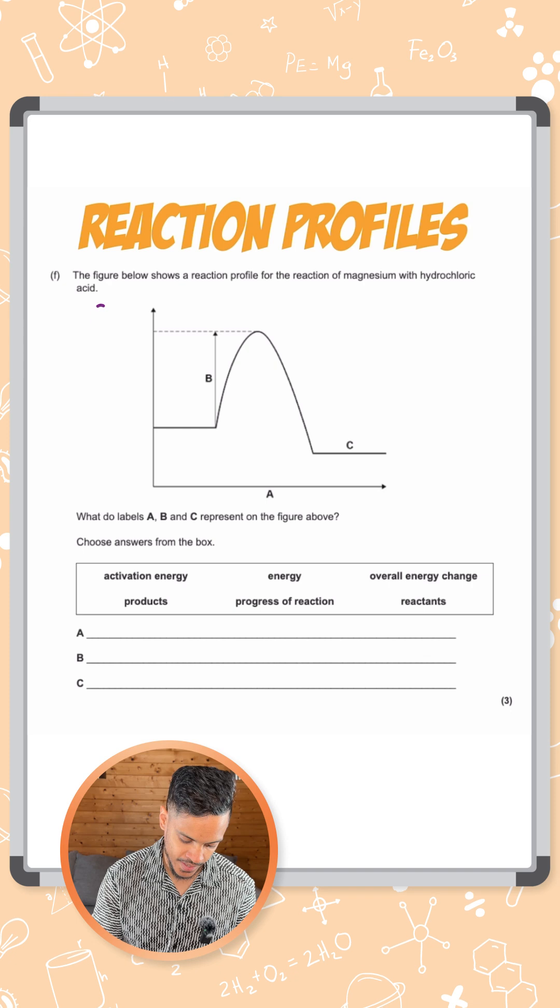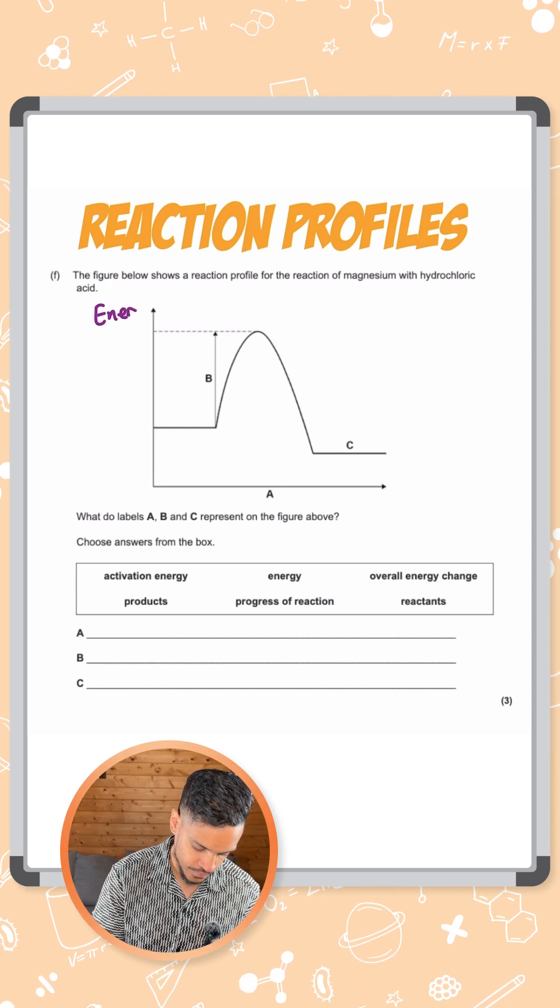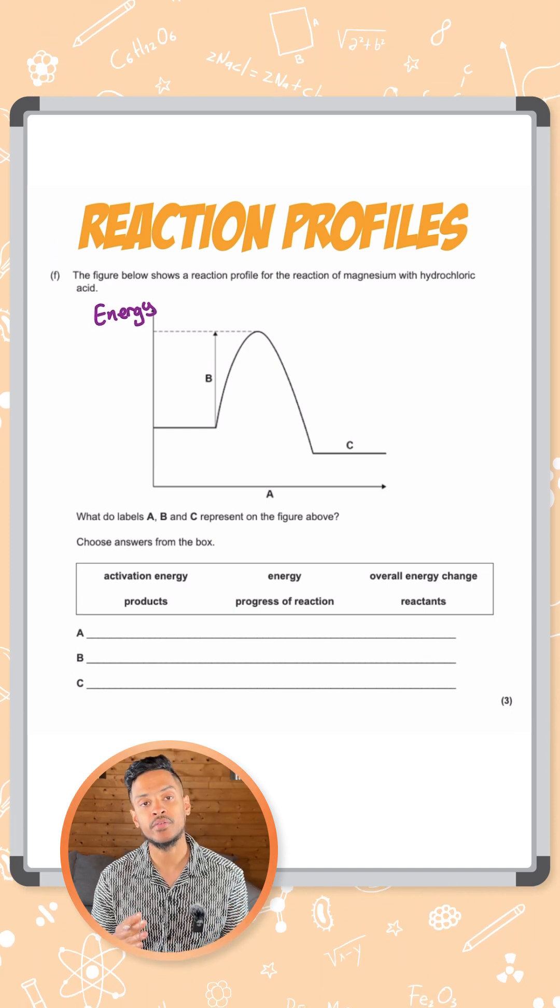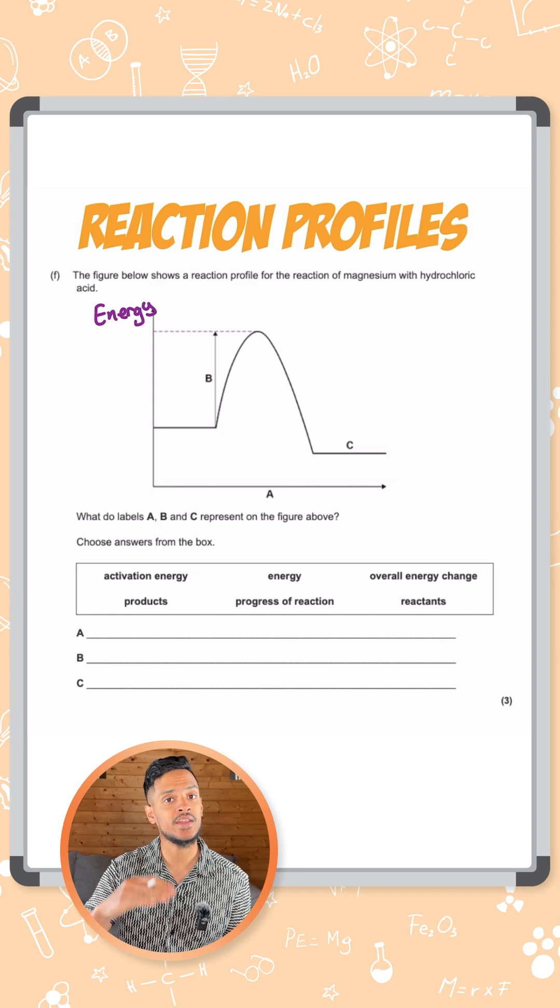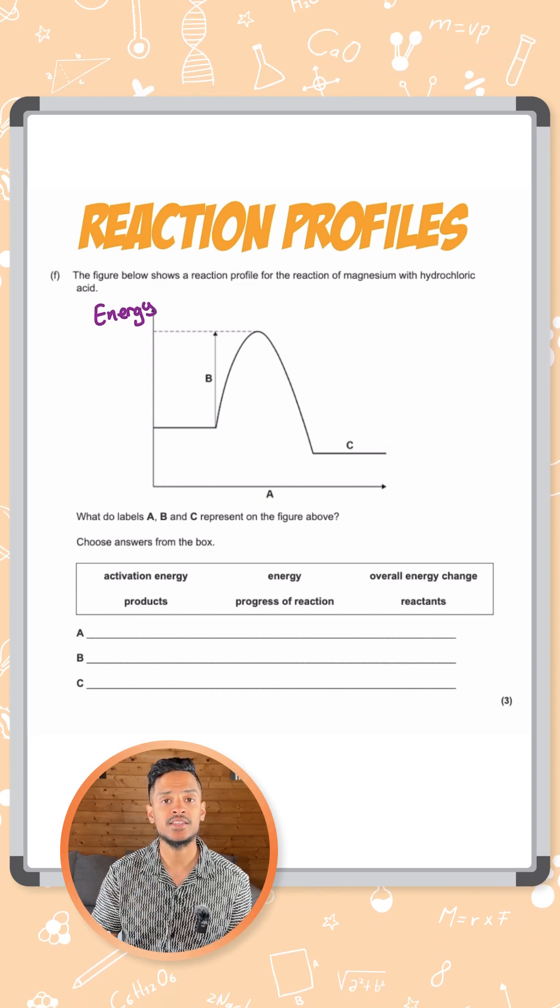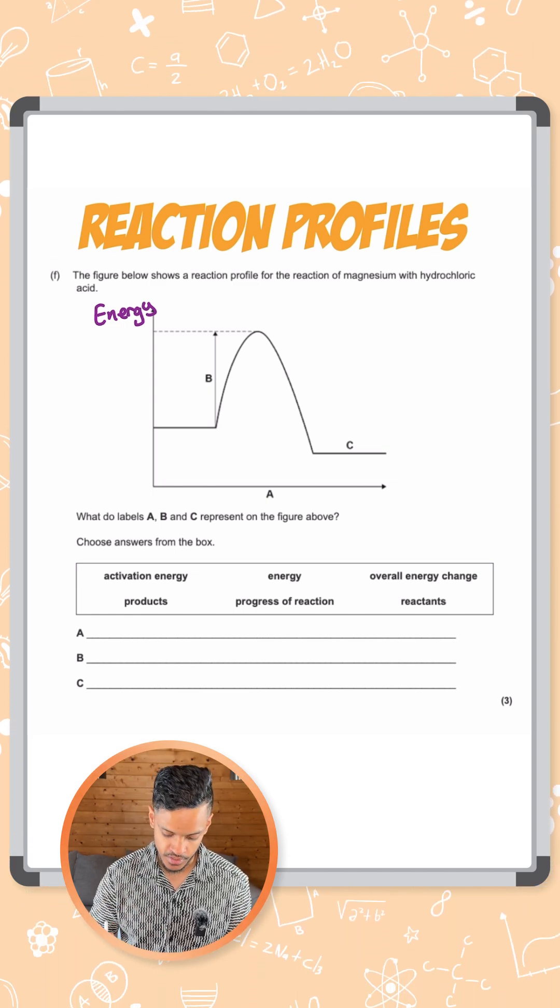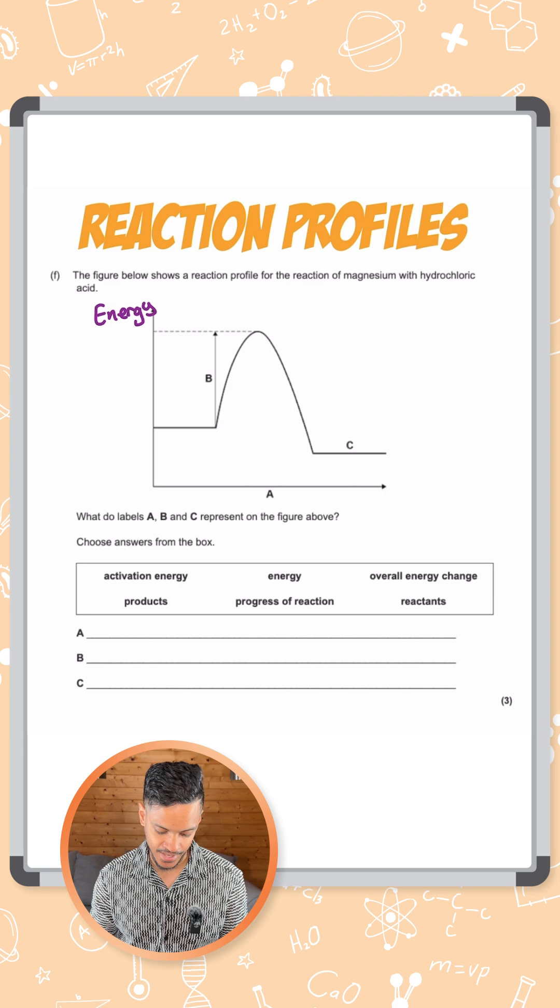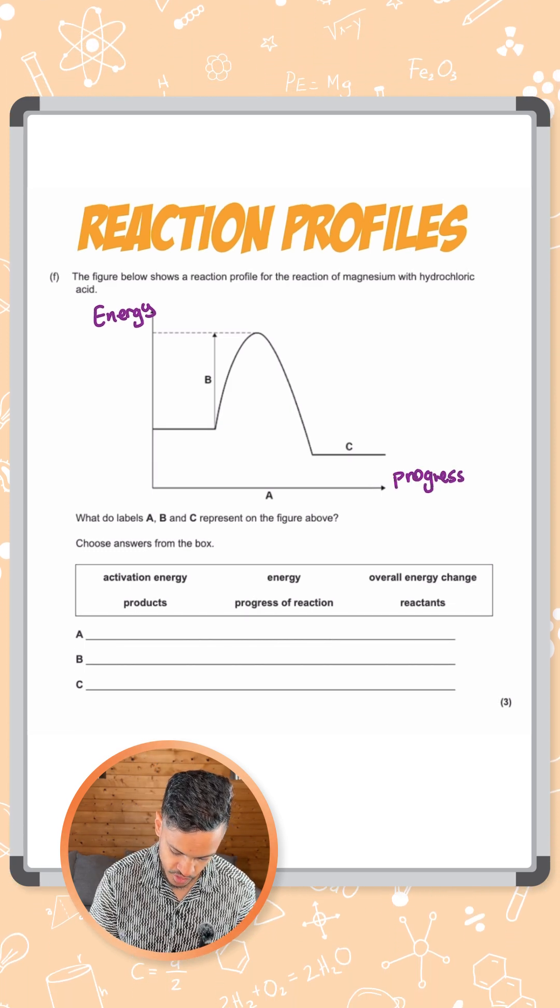So on the y-axis we have energy. That's because the whole point of a reaction profile is to show you how energy changes as a reaction progresses. So that means on our x-axis we have the progress of reaction.